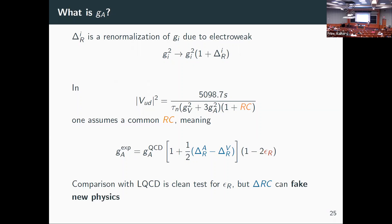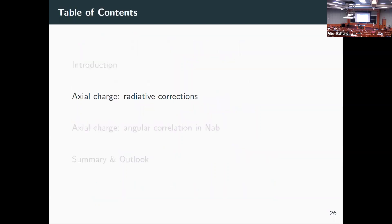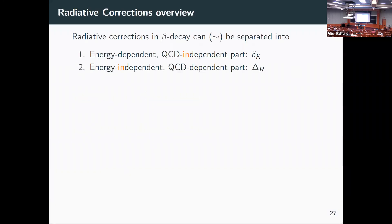If we don't have this number under control, we might attribute some difference between experiment and lattice QCD to new physics and try to go to Stockholm instead of checking our calculations. So — that was the introduction. What are radiative corrections? They can be separated into something that depends on the electron energy spectrum but contains no strong interaction physics, versus a rescaling of coupling constants that contains all the strong interaction physics but doesn't change kinematics.